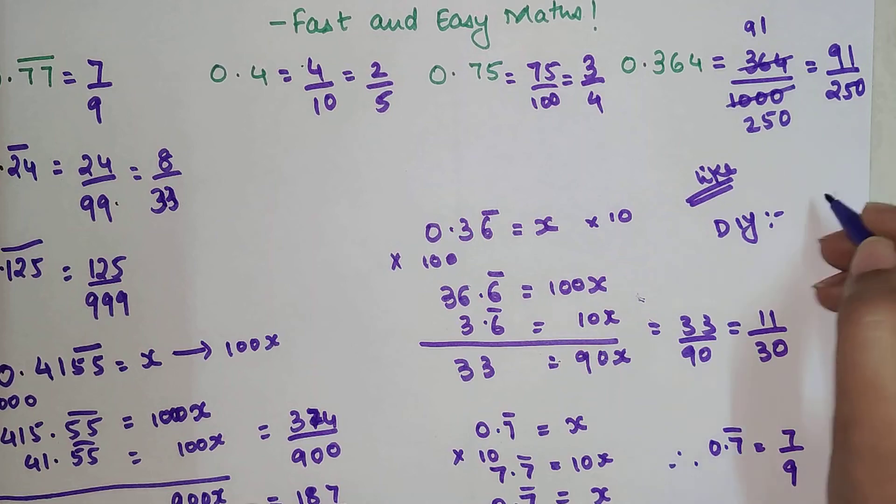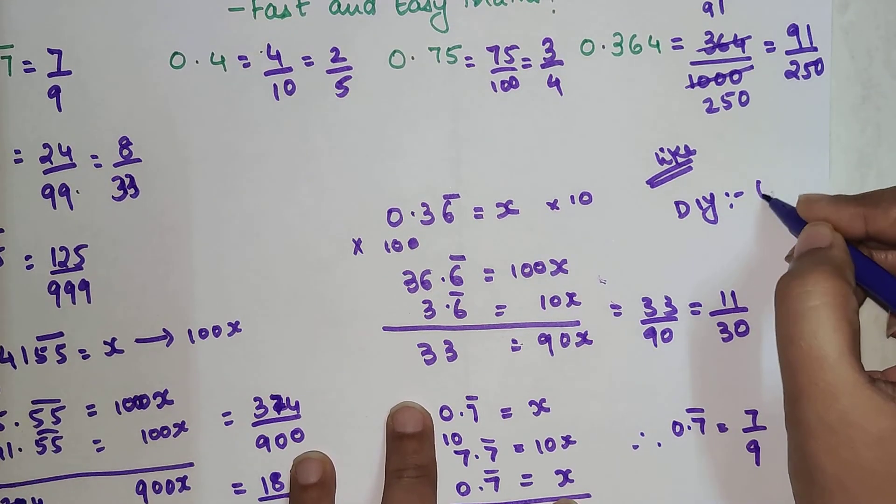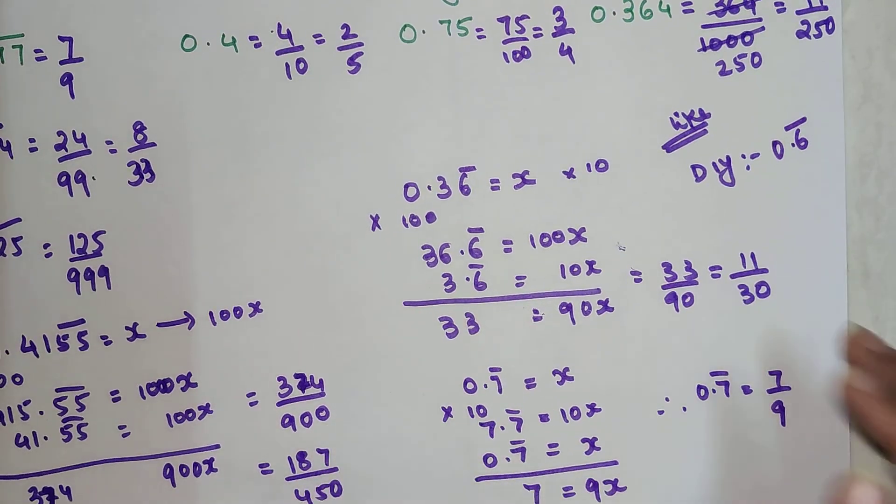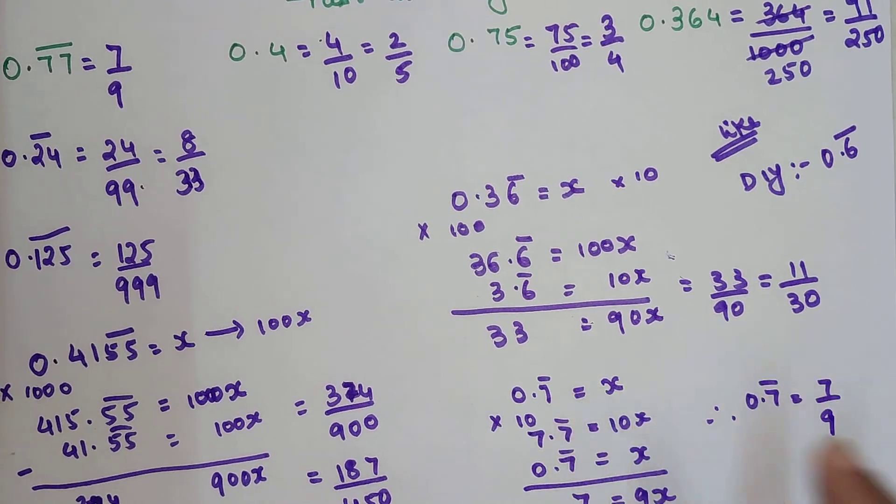You are coming to your DIY. I want you to tell me what is the answer for 0.6 recurring. Do let me know your answers in the comment section. That's it for today. I will see you in the next video.